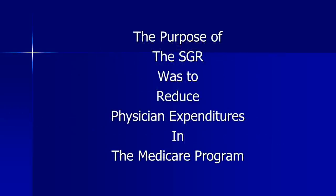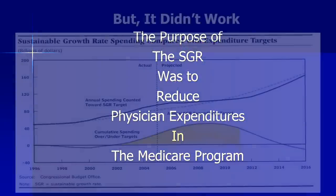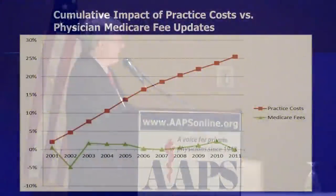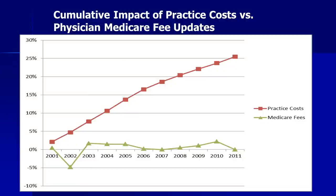The purpose of the SGR was to reduce physician expenditures in the Medicare program, but it didn't work. Every year since about 2002, expenditures exceeded the targets. The flaw in the SGR was the underlying assumption that the cost of providing medical care would follow the gross domestic product — a rather bizarre assumption — because the cost of running a medical practice grew faster than GDP.